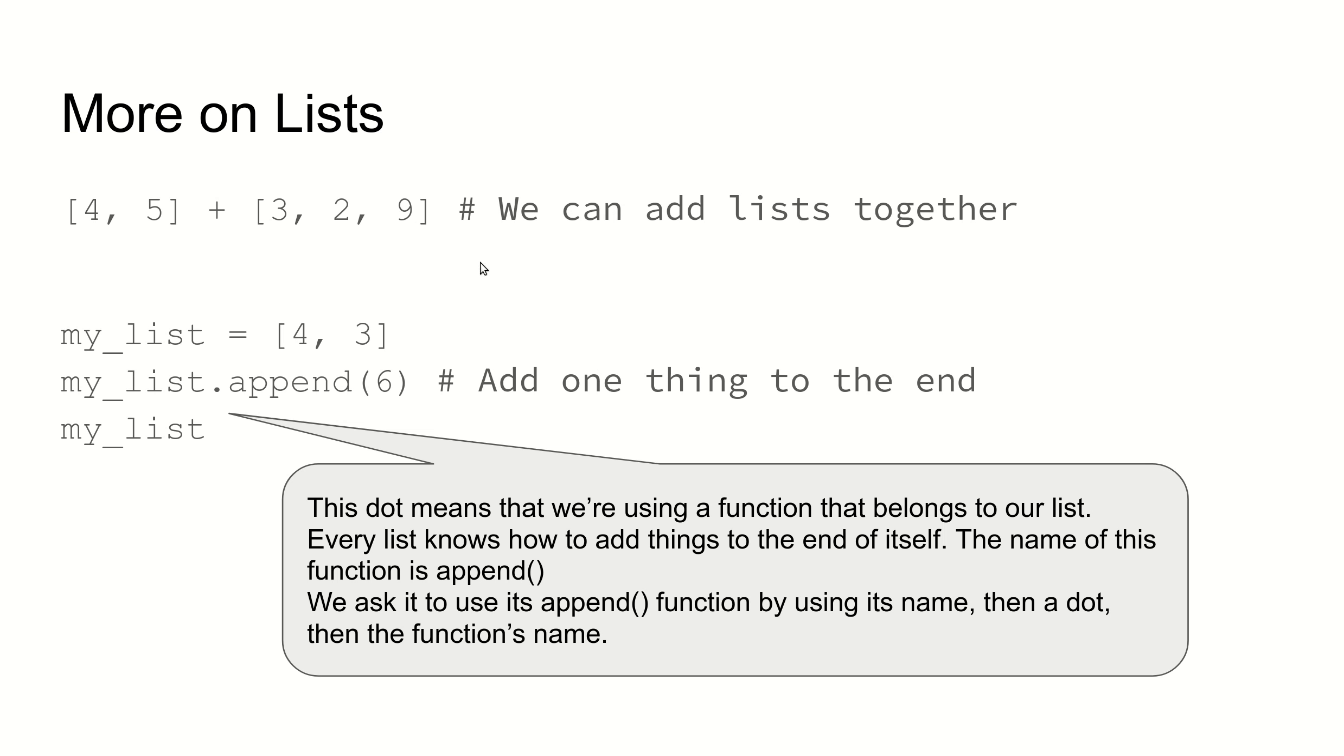We can also grow lists by adding two lists together. For example, if we have this list with 4, 5, and then this other list with 3, 2, 9, and we put plus between them, Python knows what to do. The plus operator works on lists by combining those two lists together.